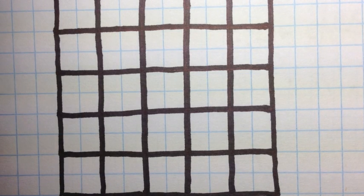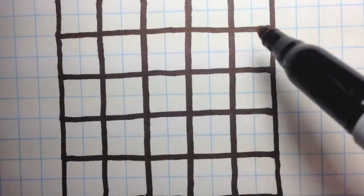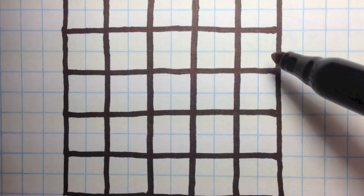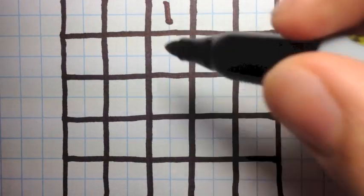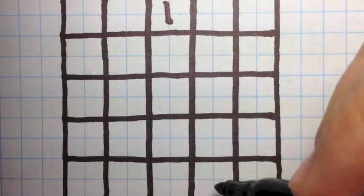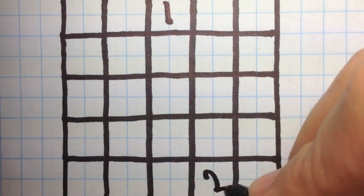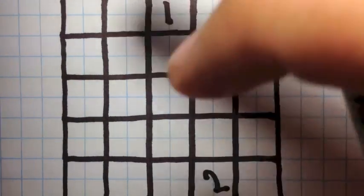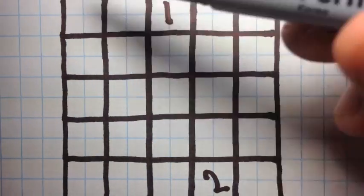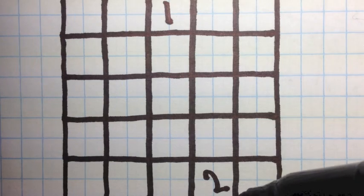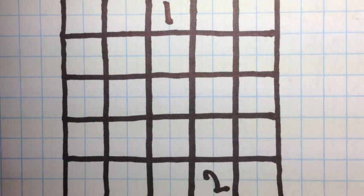We're going to use the same method that we used in our 3x3 magic square to make our 5x5 magic square. We're going to start in the top row, in the middle square, and place our first number there. Then we're going to use the same up one, right one method. Remember, the magic square wraps — if you go up one from the top row, you end up on the bottom row, and the same with right and left.